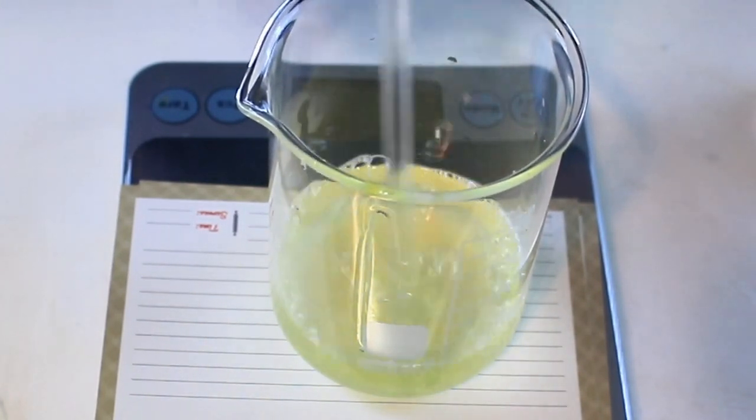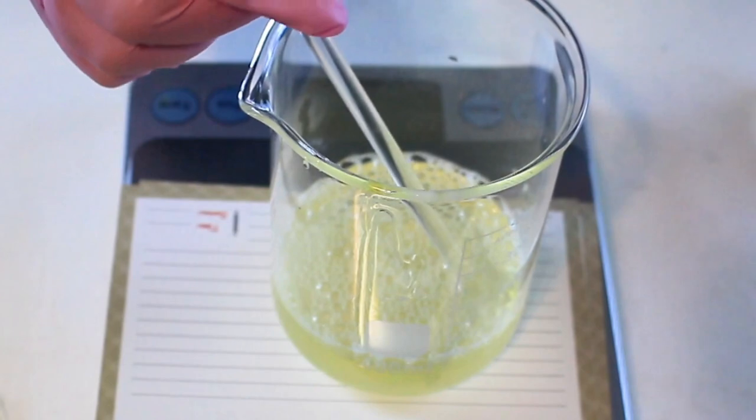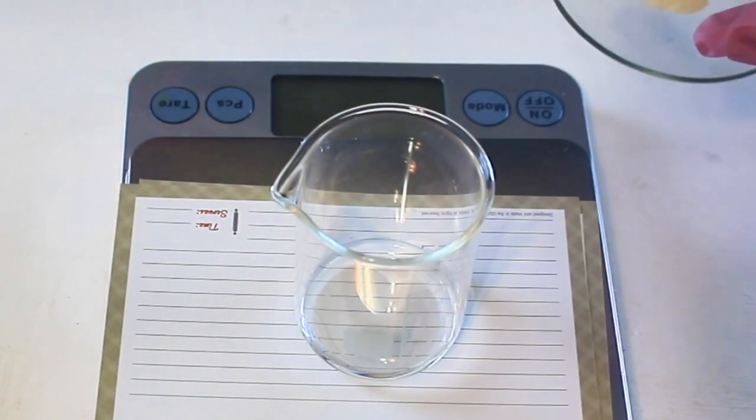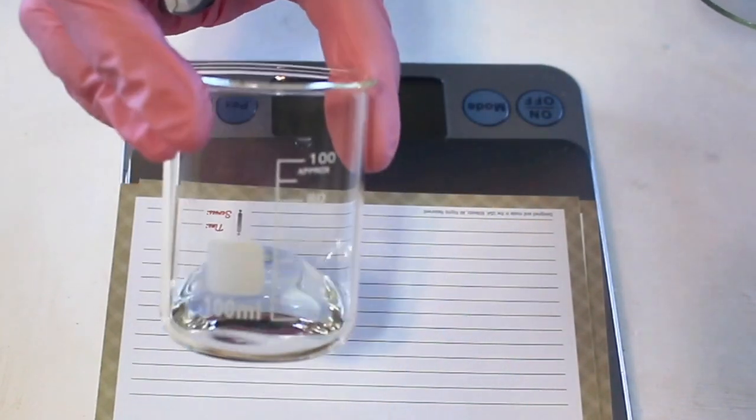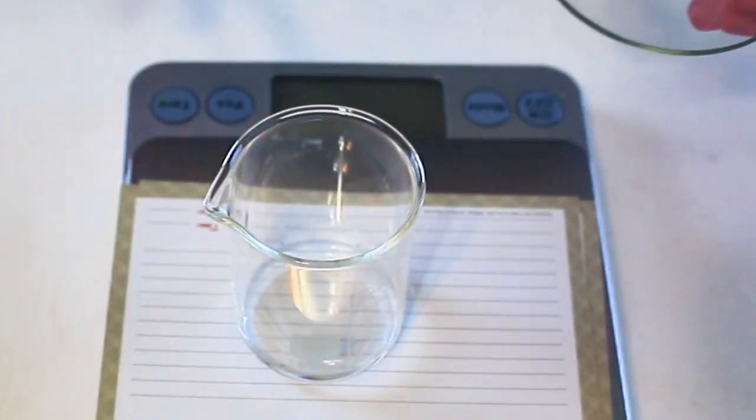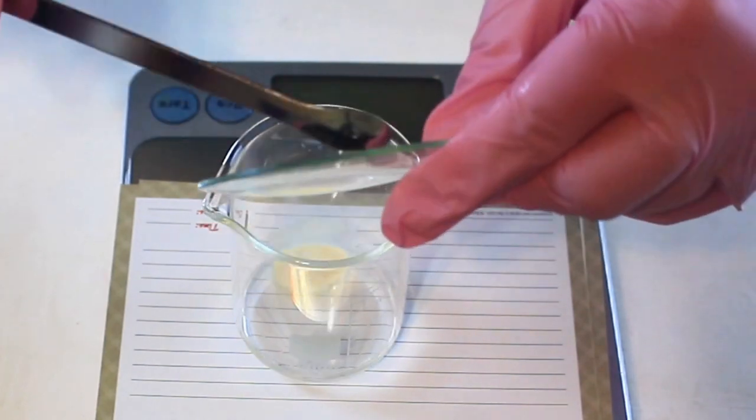Next, I'm going to mix up seven grams of propanediol and the xanthan gum. I use 0.50 grams of xanthan gum and combine this. I mixed it up just a little bit and then I had to let it sit about 15 or 20 minutes for it to thicken up before I could pour.